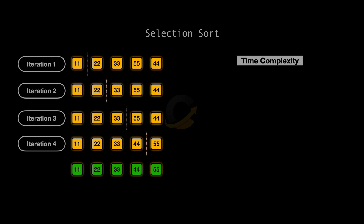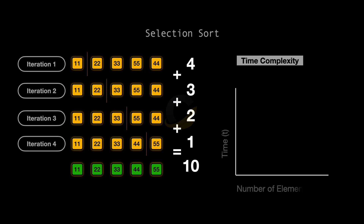Time complexity helps us understand how much time an algorithm takes based on the size of the input. For Selection Sort, regardless of the initial arrangement of the array, Selection Sort performs a consistent number of comparisons. In our example with five elements, the first pass requires comparing each element to find the minimum, which takes four comparisons. In the next pass, we have one less element to compare, so it takes three, and so on, until no comparisons are needed for the last element. Generally, for an array of n elements, the total number of comparisons is the sum of the first n minus 1 integers, which is n(n-1)/2. This formula simplifies to O(n²).